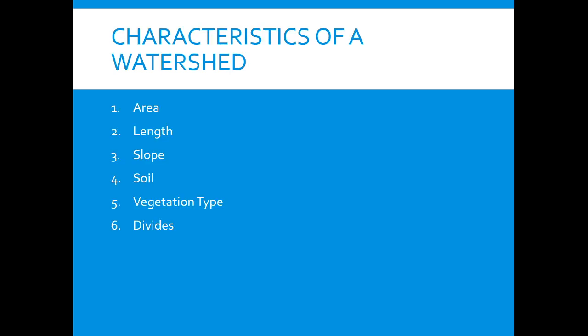How do you define a watershed? Well, it's defined by its area, length, slope, soil, vegetation type, and the divides. We'll talk about each of those in detail.